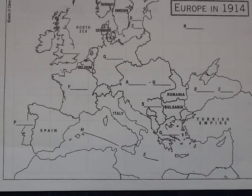This is the answer presentation for the map activity on the causes of World War One, identifying the key geography and locations in Europe, as well as the identities of the two alliances. Can you please check your work and amend where necessary?